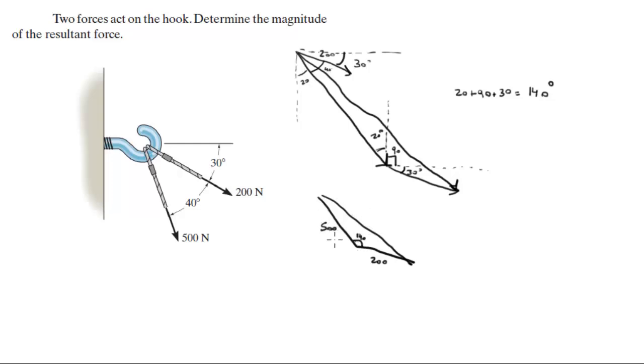Whenever you have a triangle that is not right, whenever you have any other triangle, you know two sides and the angle between them and you want to find the third side, you use the law of cosines.